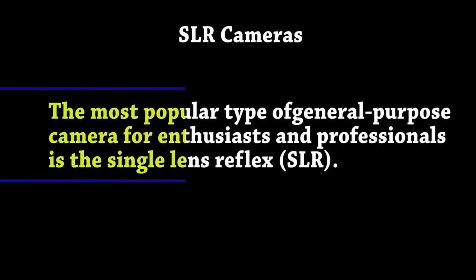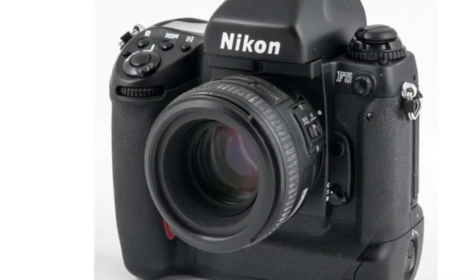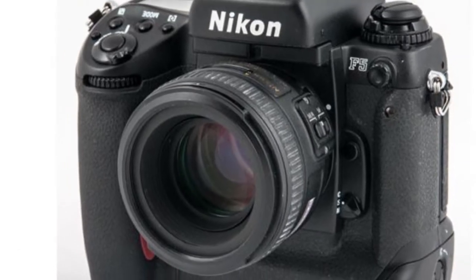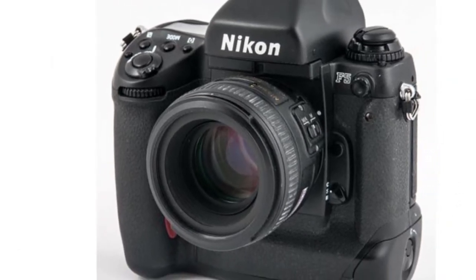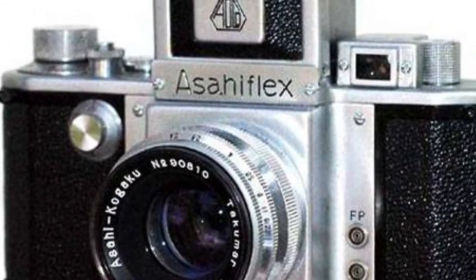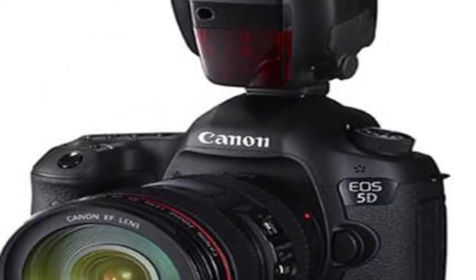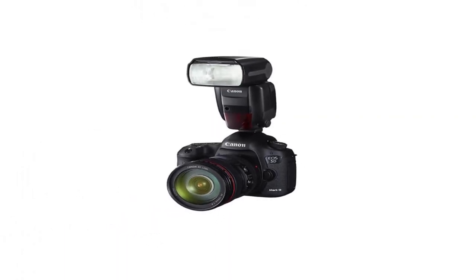SLR camera. The most popular type of general purpose camera for enthusiasts and professionals is the single lens reflex (SLR). This type of camera has a movable mirror behind the lens which reflects an image through a five-sided prism — a penta prism or pair of mirrors — onto a glass screen.